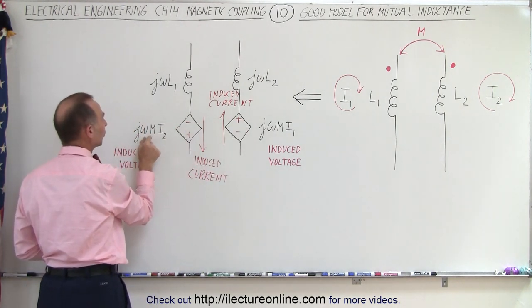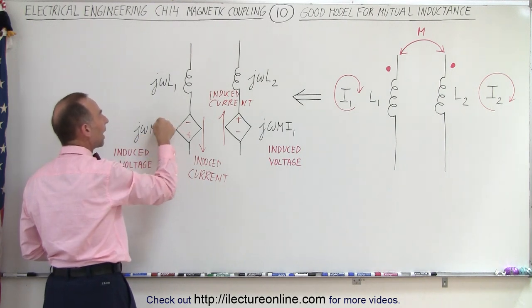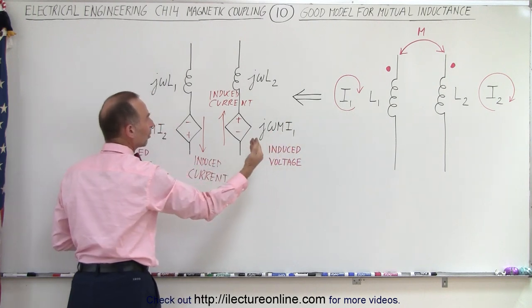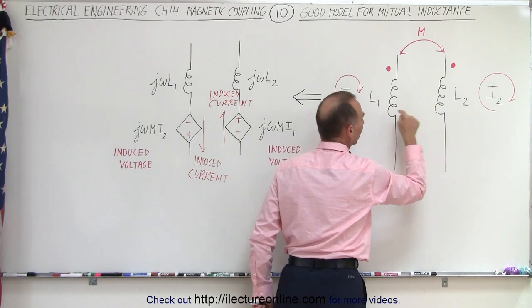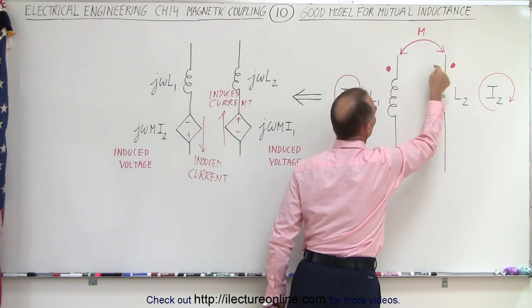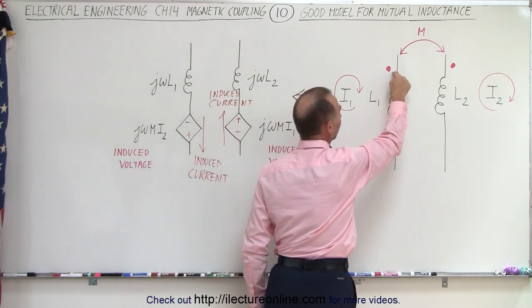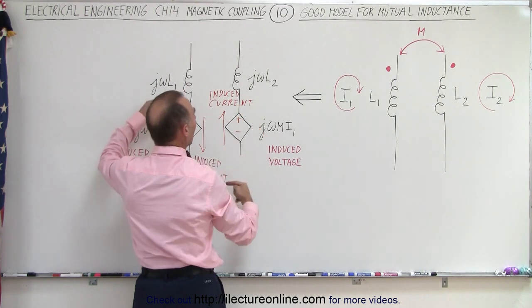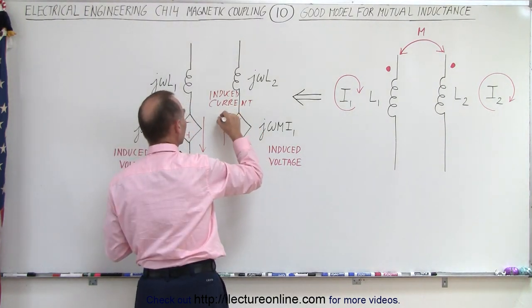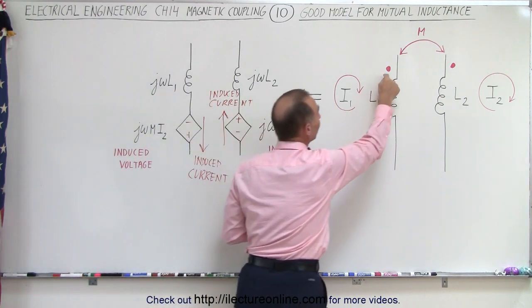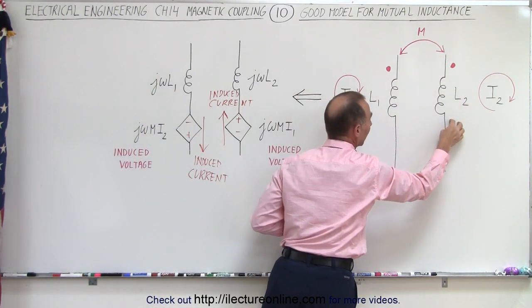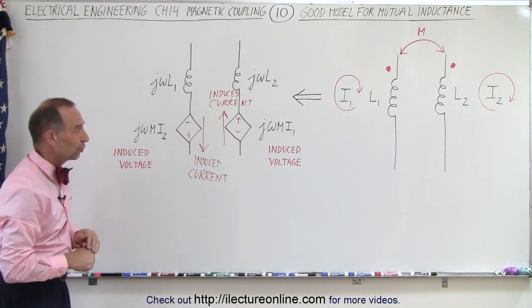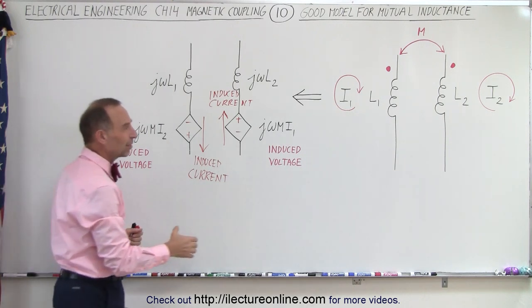The magnitude of the voltage is omega times the coupling times the current in the other circuit, and the direction is simply opposite to the direction of current in the other circuit if the coupling is mutual on the same side. If the coupling is on the other side, then the induced voltage and induced current will be in the opposite direction — it will be in this direction when the coupling is the same for the two inductors. If one of the couplings is in the opposite direction, this simply reverses the direction of the induced voltage and induced current.